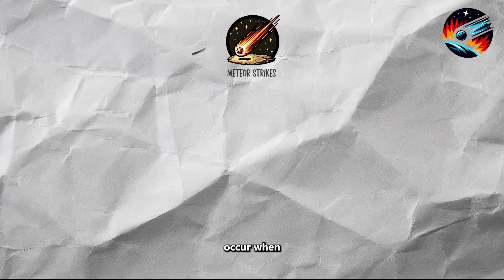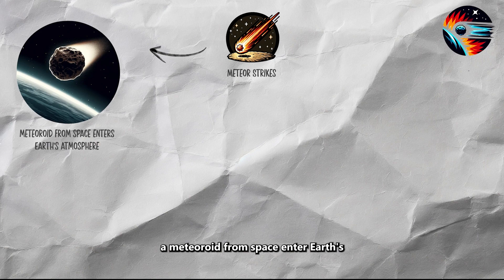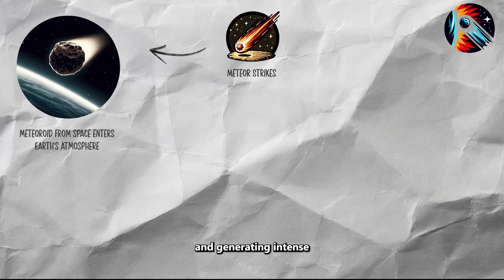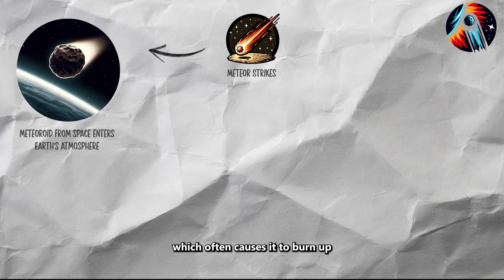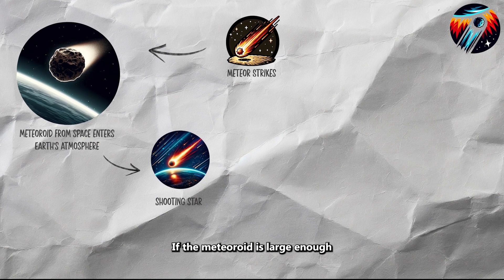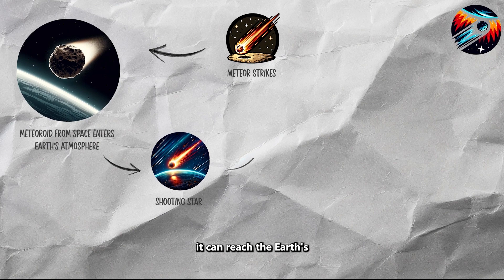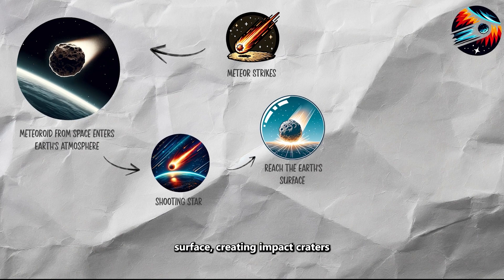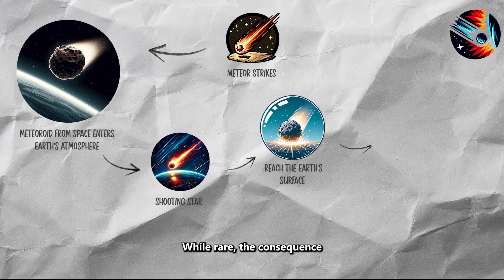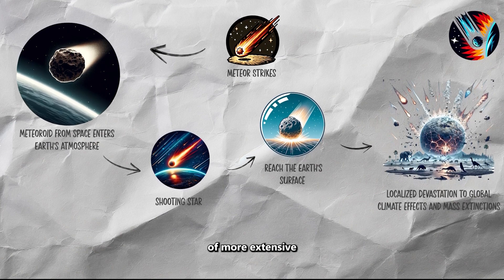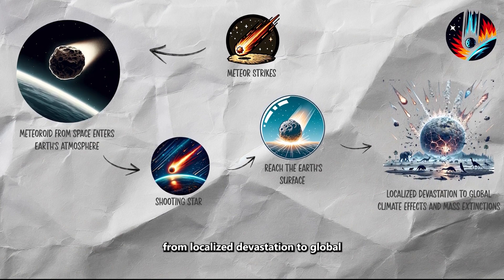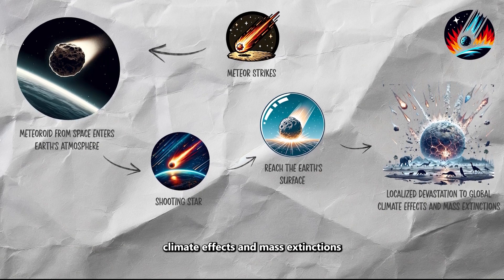Meteor strikes occur when a meteoroid from space enters Earth's atmosphere, traveling at high speeds and generating intense heat due to friction, which often causes it to burn up, visible as a shooting star. If the meteoroid is large enough to withstand this heat, it can reach the Earth's surface, creating impact craters and potentially causing significant damage. While rare, the consequences of more extensive meteor strikes can range from localized devastation to global climate effects and mass extinctions.